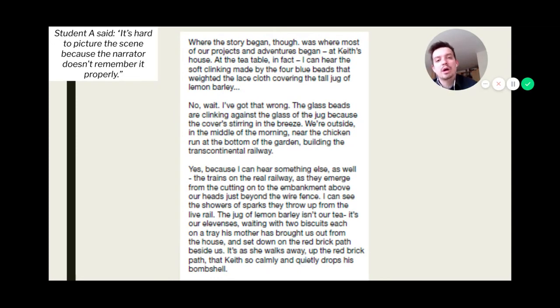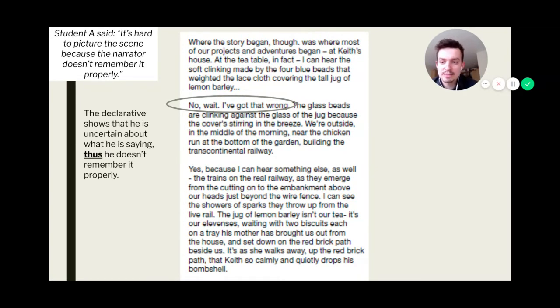So we're looking, it's hard to picture the scene because the narrator doesn't remember it properly. We need to try and look as we're reading through this to be able to find anything that either agrees or disagrees with this statement. I would suggest you pause the video now to be able to read through this and have a go. Here is one example that we found. No, wait, I've got that wrong. So we circle the quotation that we think is important. And then we would write our analysis for this. Here we're saying the declarative shows that he's uncertain about what he's saying. Thus, he doesn't remember it properly.